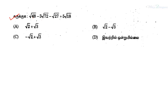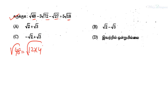Here we can write the solution. If you have root 48, it has a factor of 3. Similarly, root 72 and root 27 also have a factor of 3. To solve root 48: 48 equals 4 times 3 times 4, so root 48 equals 4 root 3.